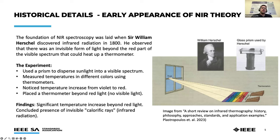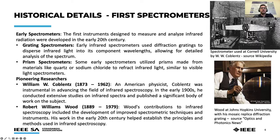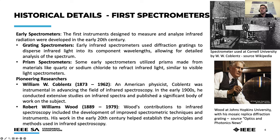Thermometers continued as radiation detectors until 1829, when Nobili invented the thermopile. The first instruments designed to measure and analyze infrared radiation were developed in the early 20th century in two categories: diffraction grating spectrometers and prism spectrometers. Early infrared spectrometers used diffraction gratings to disperse infrared light into component wavelengths, while prism spectrometers utilized prisms made from materials like quartz or sodium chloride to refract infrared light, similar to visible light spectrometers.